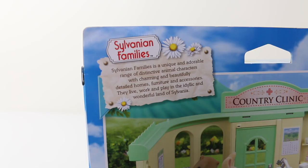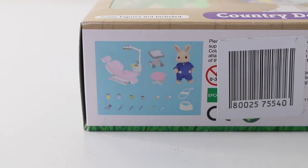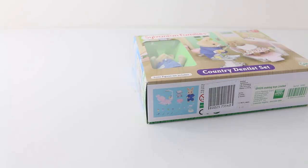And it also says Sylvanian families is a unique and adorable range of distinctive animal characters with charming and beautifully detailed homes, furniture and accessories that live, work and play in the idyllic and wonderful land of Sylvanian. And underneath the box we have a picture of all the bits that come with the set. I'm going to go ahead and remove all the contents and then we can check them out up close.